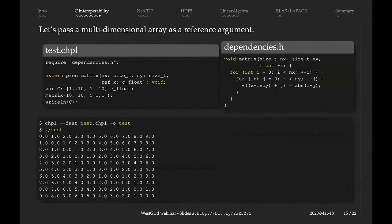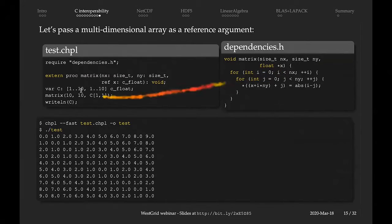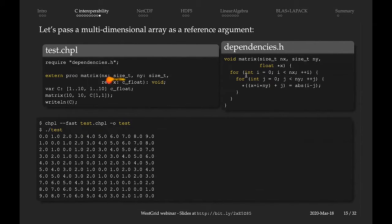For multidimensional arrays, here is a two-dimensional array example. The function expects a pointer to the 2D array. We declare a two-dimensional array in Chapel and pass the first element. In the function prototype, we declare this argument as a reference variable. When we run this code, the array gets initialized exactly the way it was coded in the C function.